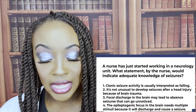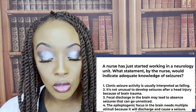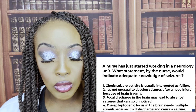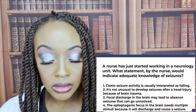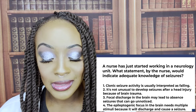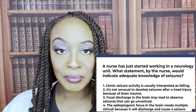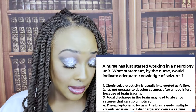A nurse has just started working in a neurology unit. What statement by the nurse would indicate adequate knowledge of seizures? One: clonic seizure activity is usually interpreted as falling. Two: it's not unusual to develop seizures after head injury because of brain trauma. Three: focal discharge in the brain may lead to absence seizures that can go unnoticed. Four: the epileptogenic focus in the brain needs multiple stimuli to discharge and cause a seizure. The correct answer is two — it's not unusual to develop seizures after head injury because of brain trauma.